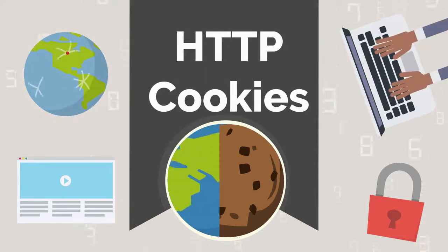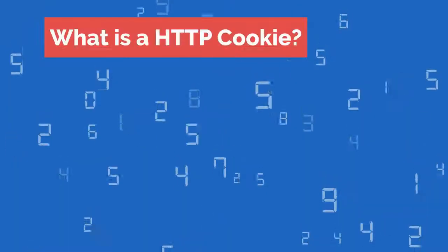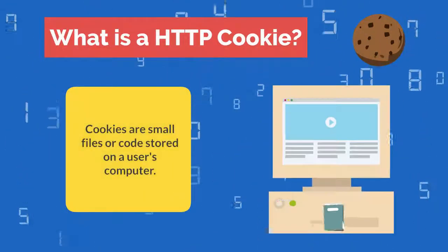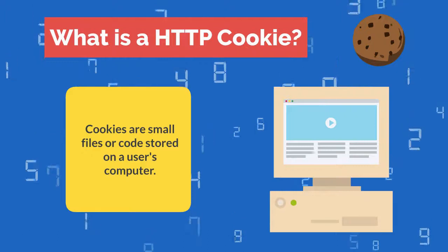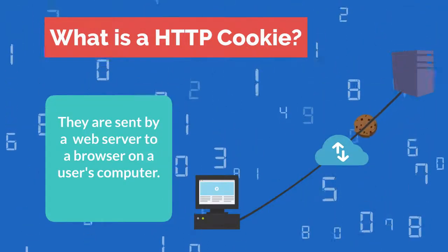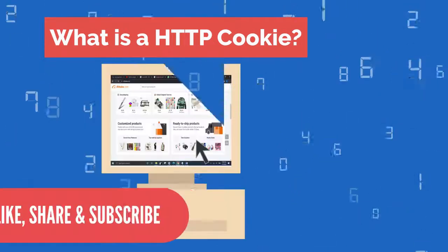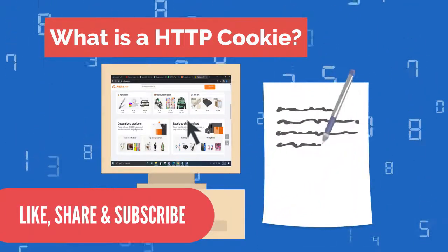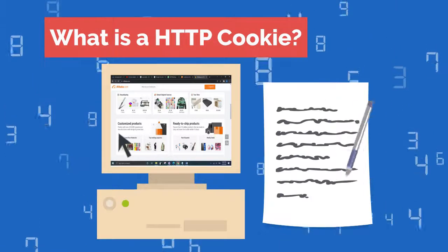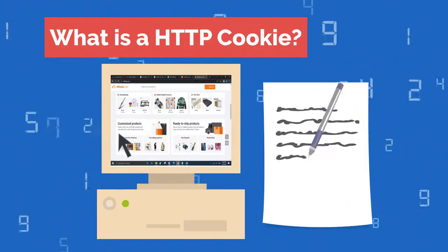What is a HTTP cookie? Cookies are small files or code stored on a user's computer. They are sent by a web server to a browser. Cookies allow user tracking and maintain user preferences. Collected data can also be used to customize the web page for each individual user.